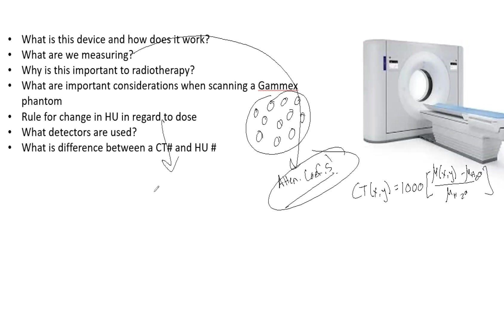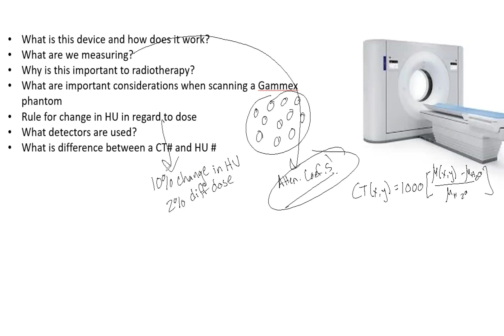The rule for change in HU in regard to dose is something always remembered from grad school. A 10% change in HU means a 2% difference in dose. This is good for any physicist to know — if you're looking at a treatment plan and there's a difference in HU, you can say that's a 30% difference from what it should be, so your dose may be off by up to 6%.